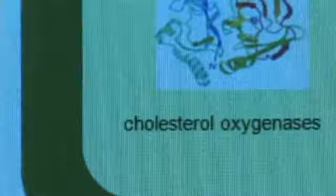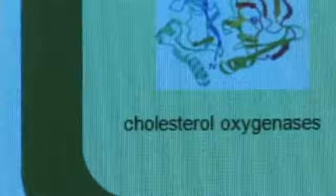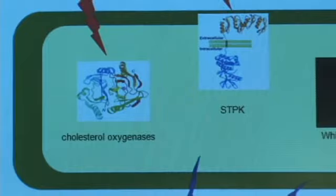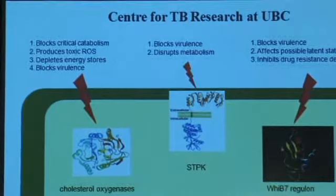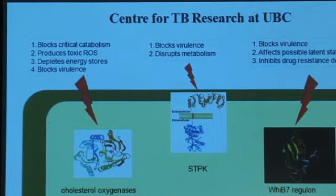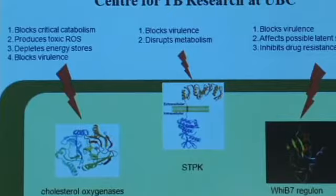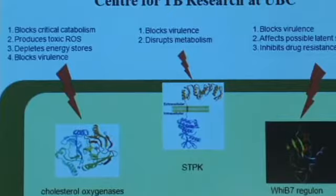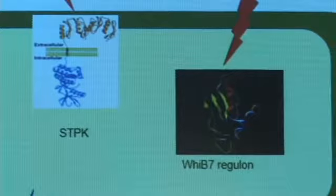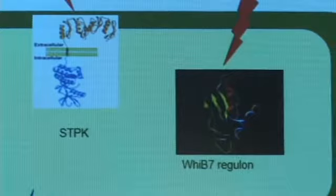Here at the Center for TB Research, we are targeting a number of different systems within the bacterium to try and develop novel therapeutic strategies. Some of these involve cholesterol-degrading enzymes that the bacterium uses as a source of energy, particular signaling proteins that the bacterium uses to trick and manipulate its host in order to survive, and systems that the bacterium uses to increase its resistance and virulence.